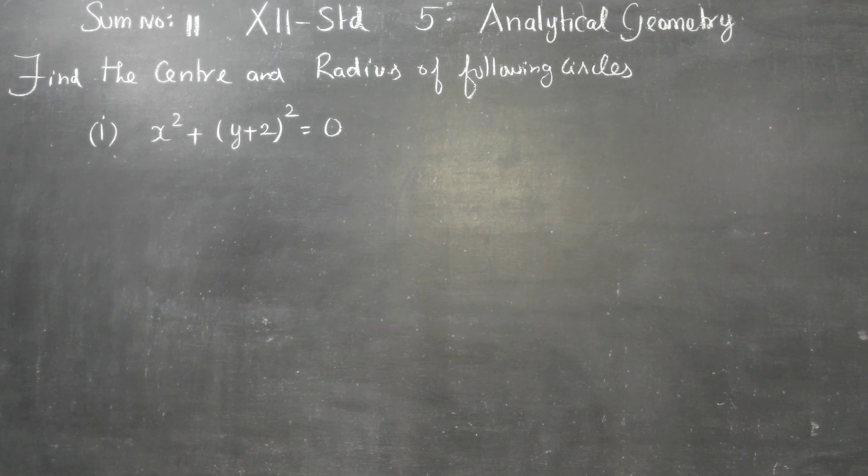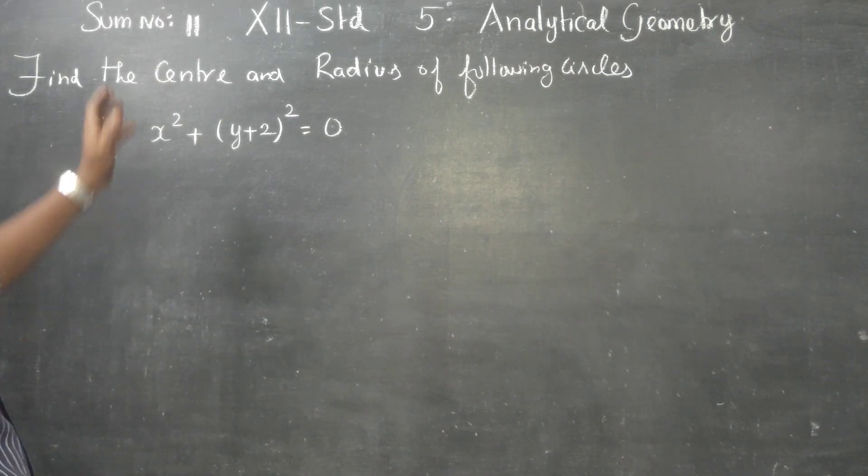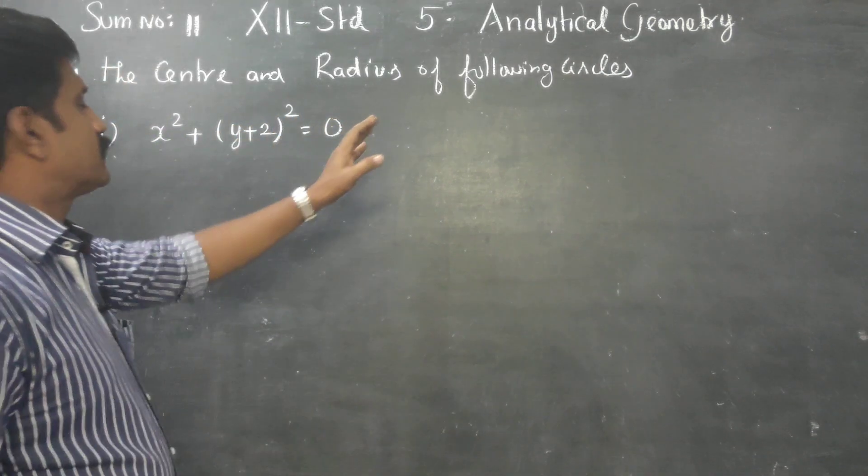Dear 12th standard students, chapter number 5, two-dimensional analytical geometry, sum number 11: find the center and radius of the following circles.